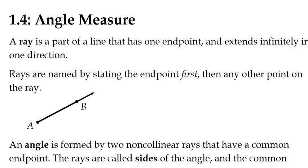Before we can understand angles, we need to know what a ray is. A ray is a part of a line that has one endpoint and extends infinitely in one direction. Rays are named by stating the endpoint first and then any other point on the ray.